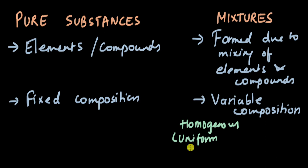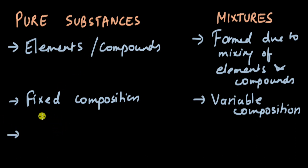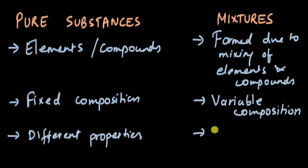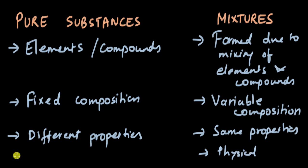Third, pure substances show different properties from their constituents while mixtures show the same properties. Fourth, mixtures can be separated by physical means — evaporation, crystallization, chromatography — while for pure substances you need chemical means of separation to break down compounds. To separate air into its constituent particles or salt water into salt and water, you can use physical means. These are the key differences between pure substances and mixtures.